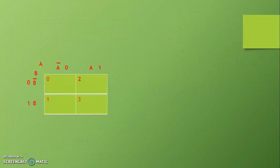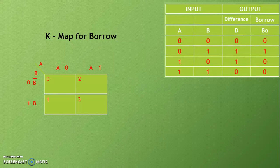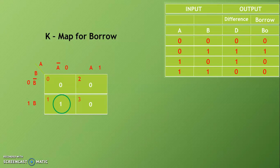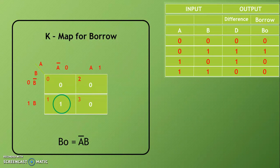Same way we can prepare a K-map for the borrow. With the truth table for reference, we know that for the borrow only condition 01 gives high output. So we write 1 in cell number 1 and 0 in all other remaining cells. Writing the boolean function for the borrow: BO = A̅·B. Now we have both boolean functions for difference and borrow available.